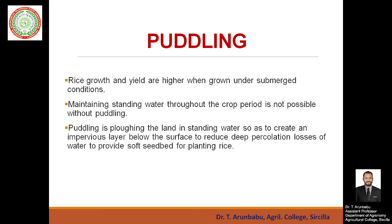Rice growth and yield are higher when rice is grown under submerged conditions. Maintaining standing water throughout the crop period is not possible without puddling. Puddling is a specialty operation followed in rice cultivation — it means ploughing the land in standing water to create an impervious layer below the surface, reducing deep percolation losses of water and providing a soft seedbed for planting rice. The impervious layer does not allow water into the soil profile.